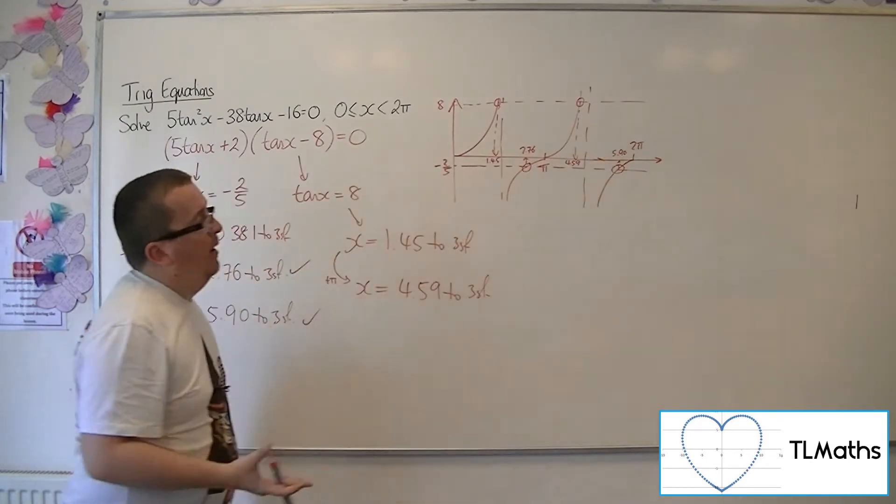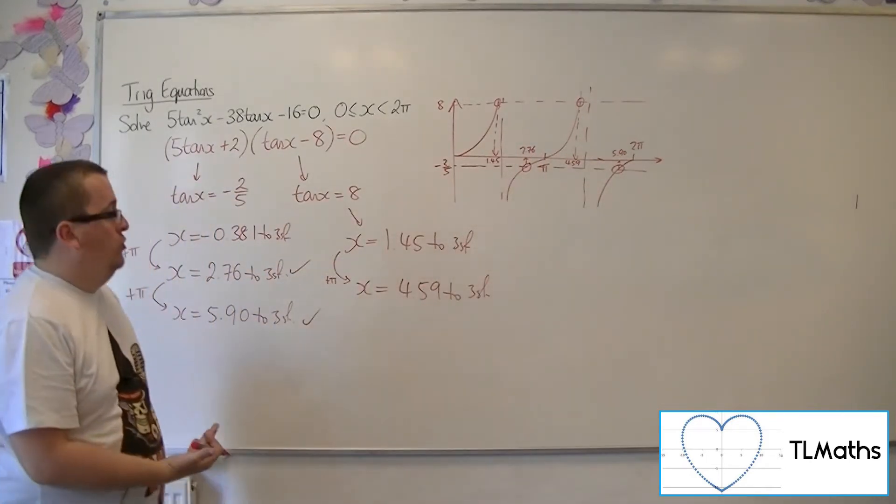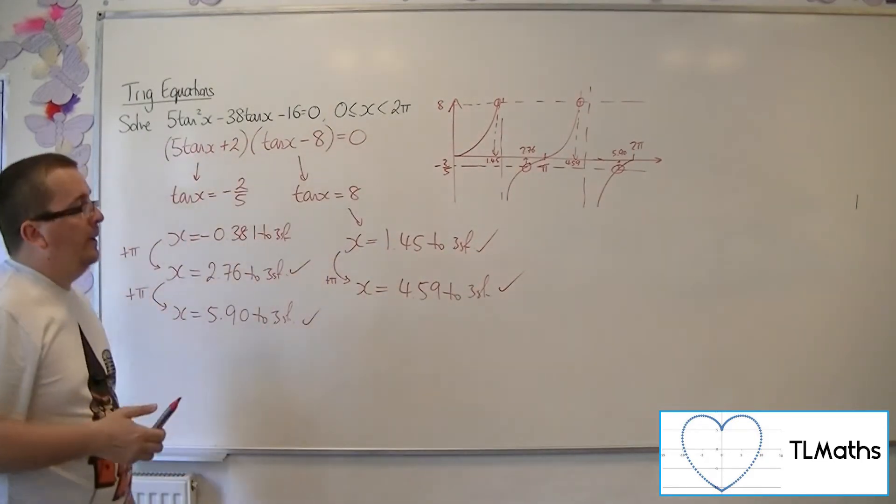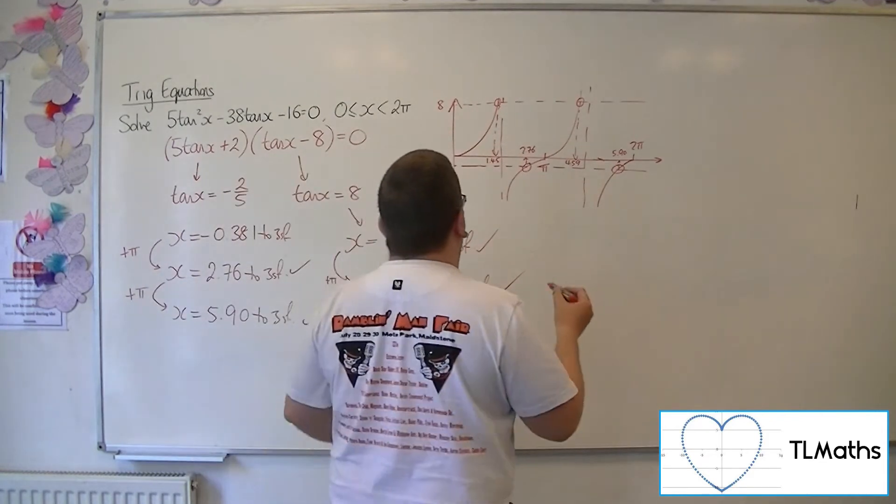And then adding pi onto that would get me outside the range. So these are the four solutions. We can't include that one, OK, because it's not between 0 and 2 pi.